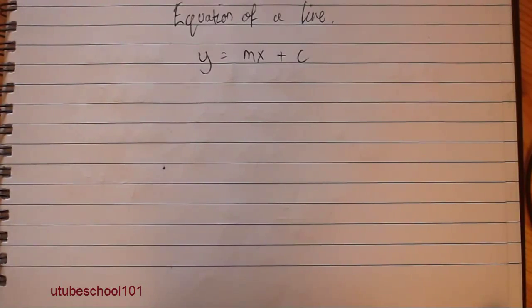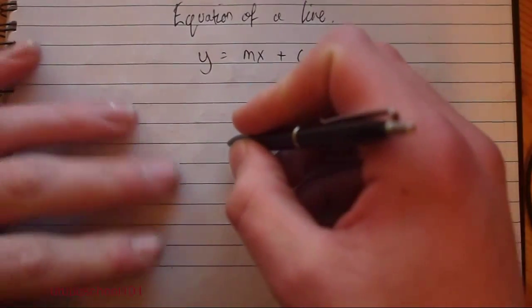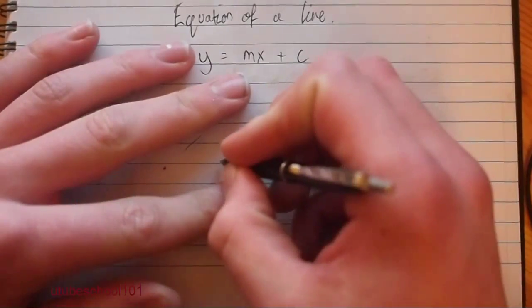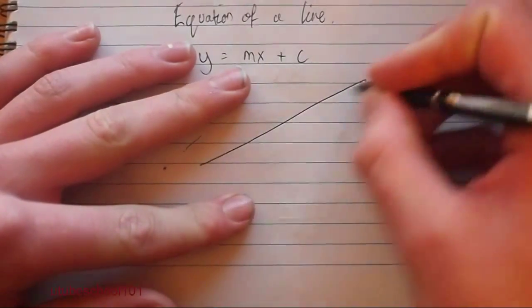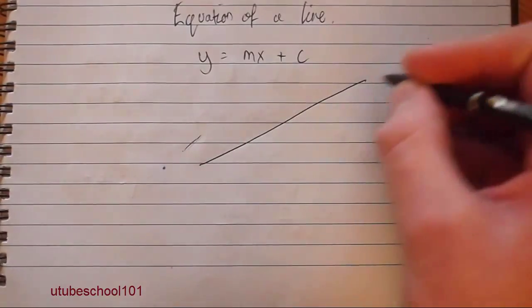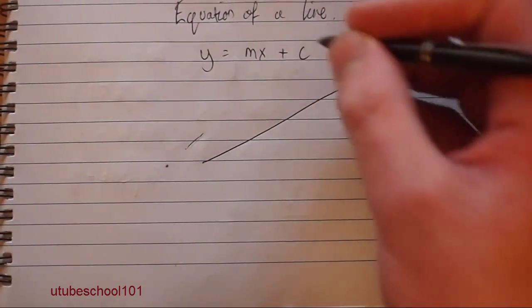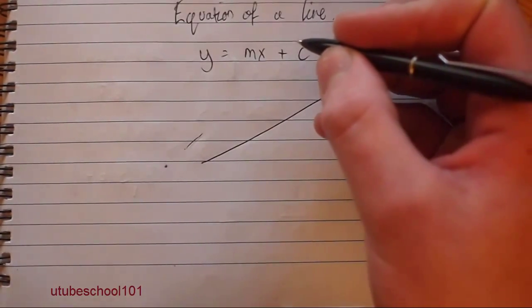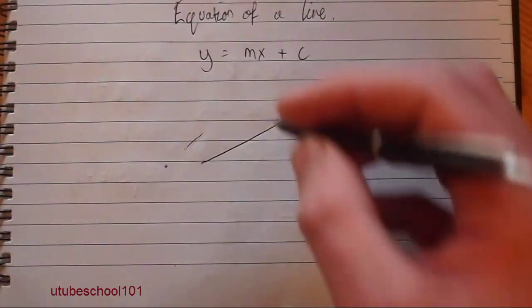Now, the equation of a line enables you to plot, and accurately plot, a line or dots on a graph using the desired equation, because each straight line will have an equation for it, and this equation is broken down into two parts which give you an idea about what the line is going to be looking like.